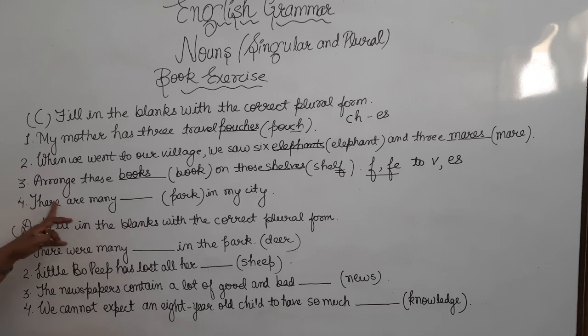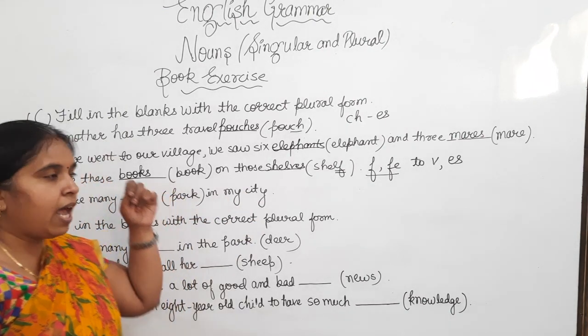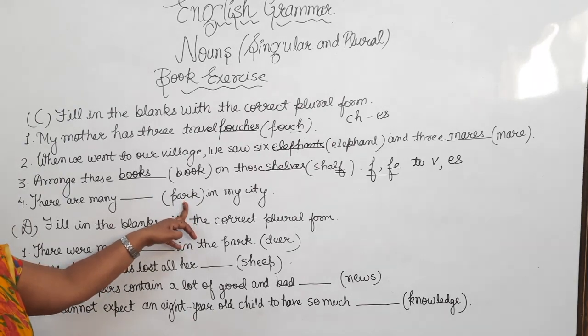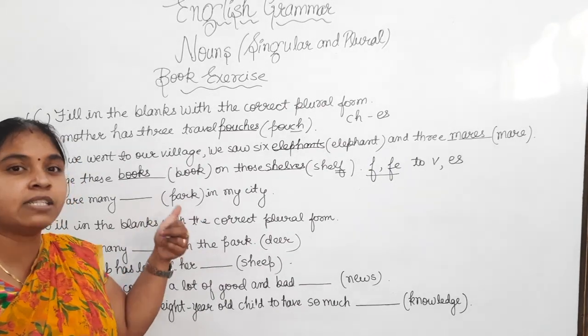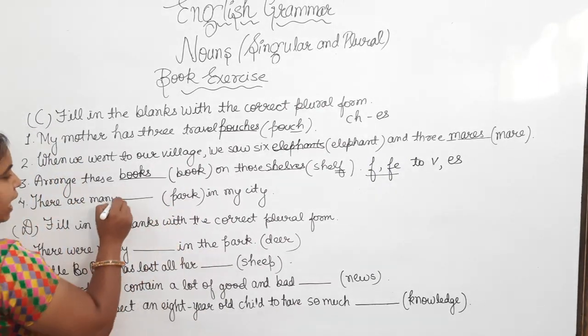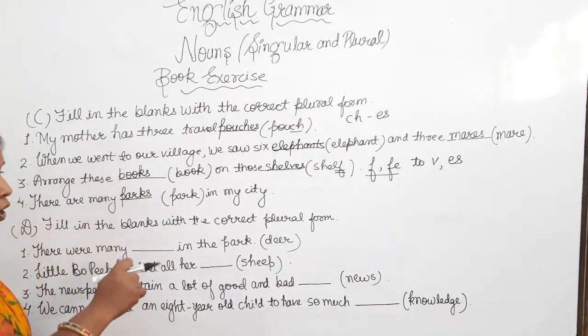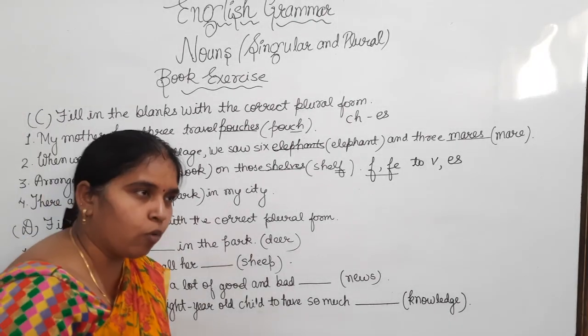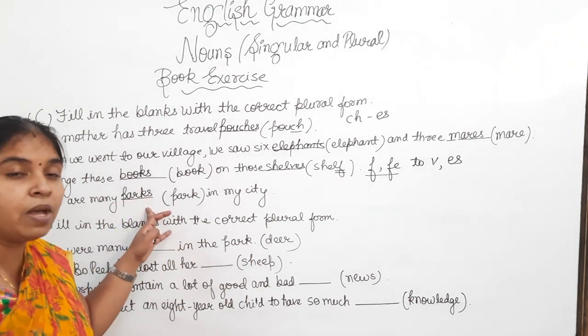So, in this manner, we will write the plural of shelf. Now, fourth one, there are many dashes in my city. And in the bracket, the noun is park. So, the singular noun is park and the plural of this park is parks. P-A-R-K-S. We only add S there to make the plural noun. In this manner, we will do this exercise in your grammar book.